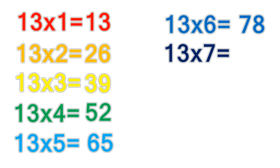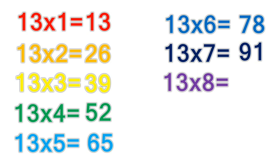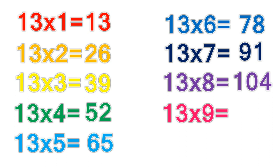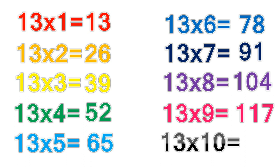13 times 7 equals 91. 13 times 8 equals 104. 13 times 9 equals 117. 13 times 10 equals 130.